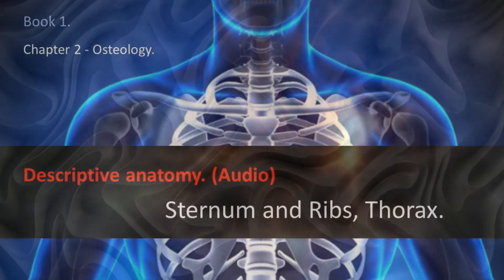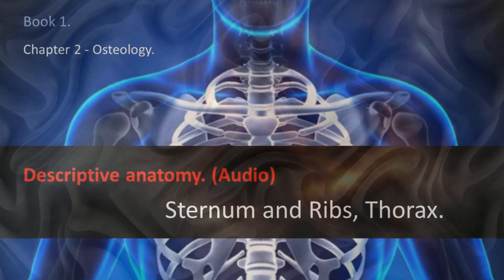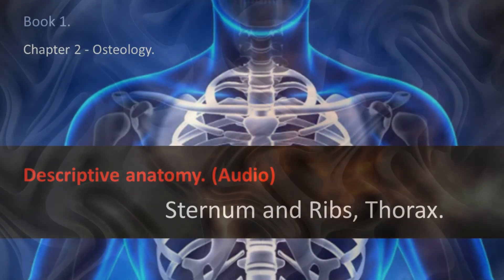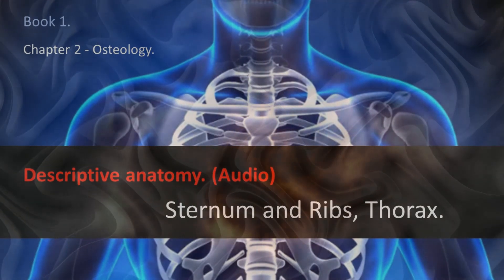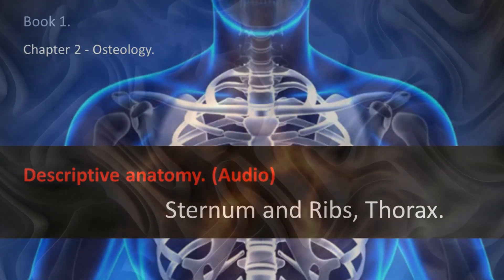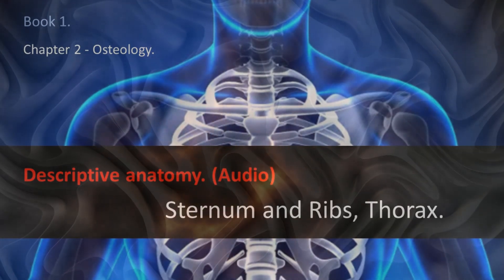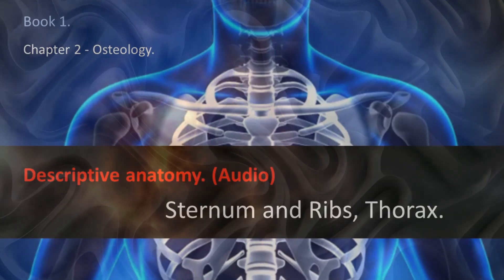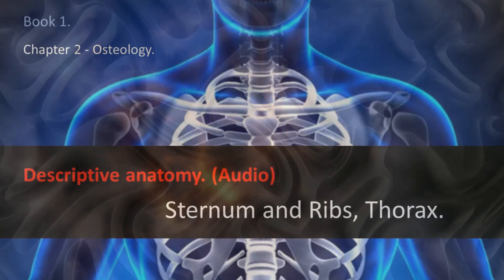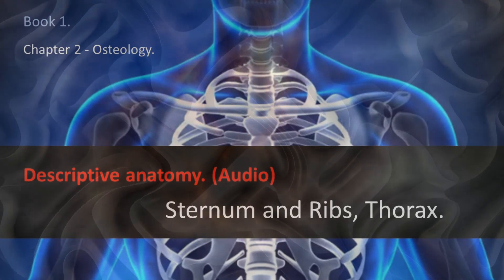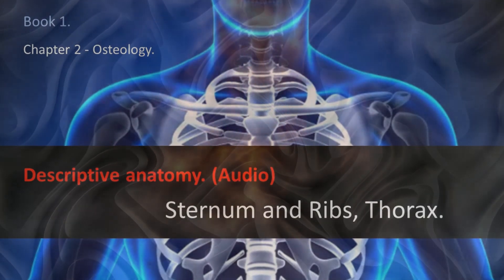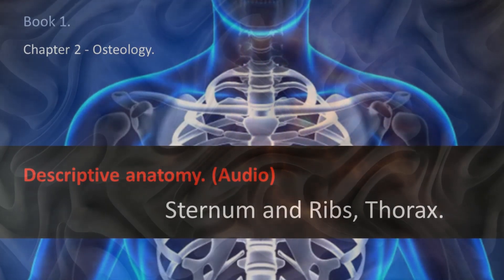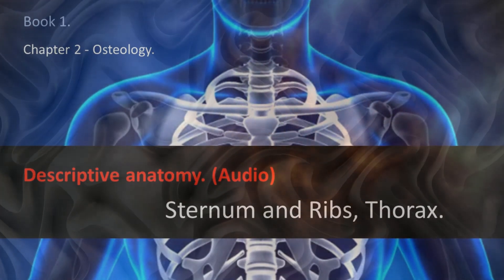Previous Face. Almost flat transversally, it is more or less convex vertically. Notice in it a series of transversal lines that go from one edge to the other, vestiges of the welding of the different pieces, sternebrae, that enter into the primitive constitution of the sternum. It gives attachment to the sternal bundle of the sternocleidomastoid and to the median fascicles of the pectoralis major. In the lower part, immediately above the xiphoid process, there is a more or less marked depression, the supraxiphoid fossa.